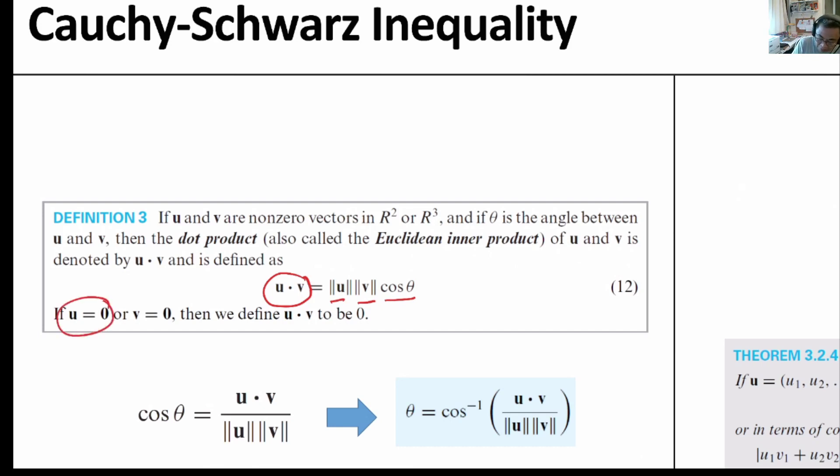In the case when either u or v is the zero vector, then u dot v is defined to be zero value, the scalar.